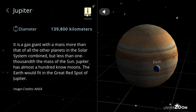Jupiter, diameter: 139,800 kilometers. It is a gas giant with a mass more than that of all the other planets in the solar system combined, but less than one-thousandth the mass of the Sun. Jupiter has almost a hundred known moons. The Earth would fit in the great red spot of Jupiter.